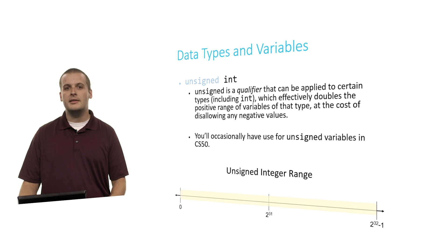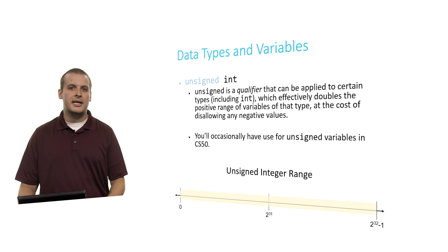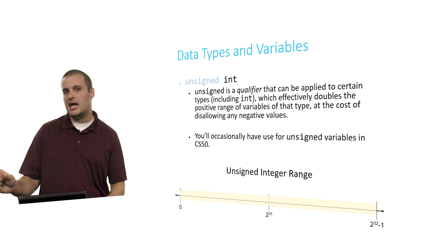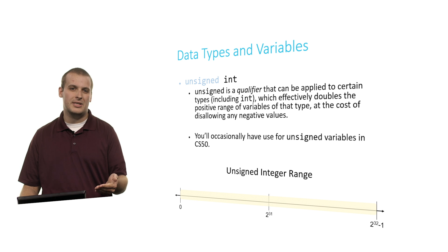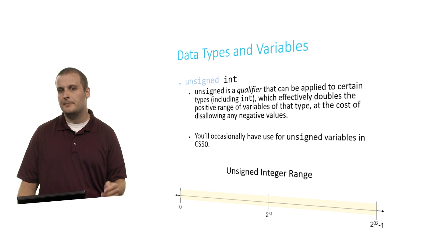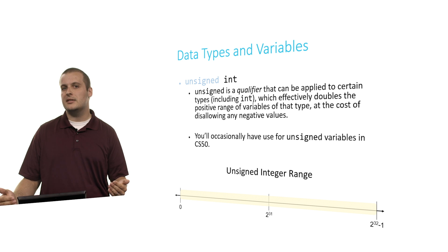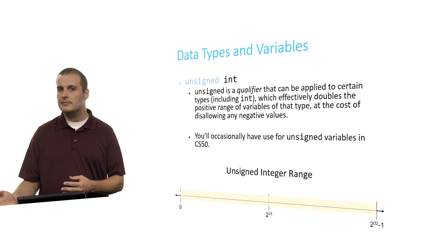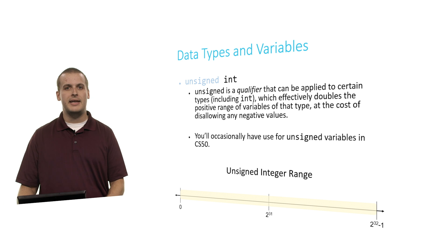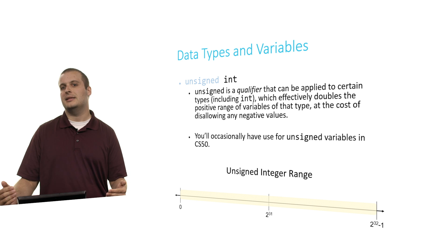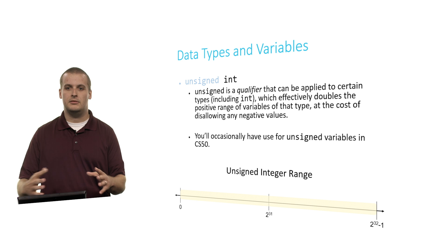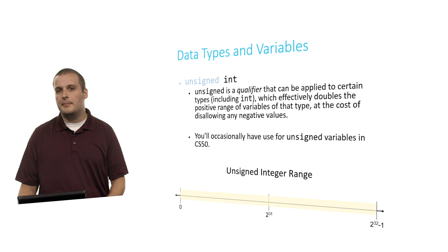We also have something called an unsigned integer. Unsigned ints are not a separate type of variable — rather, unsigned is what's called a qualifier. It modifies the data type of integer slightly. What unsigned effectively does is double the positive range of values that an integer can take on, at the expense of no longer allowing negative values. So if you have numbers that you know will get higher than 2 billion but less than 4 billion, which is 2 to the 32nd power, you might want to use an unsigned int if you know your value will never be negative.